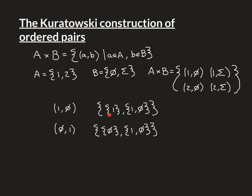The reason this captures all the information of the ordered pair is that all an ordered pair encodes is: which two elements there are, and which order they're in — because, for instance, (1, φ) is not the same thing as the ordered pair (φ, 1). This construction captures both pieces of information. It captures the two elements, and by having the singleton set, it captures the order: the element in the singleton set is the first element, and the element that only appears in the set containing both is the second element.